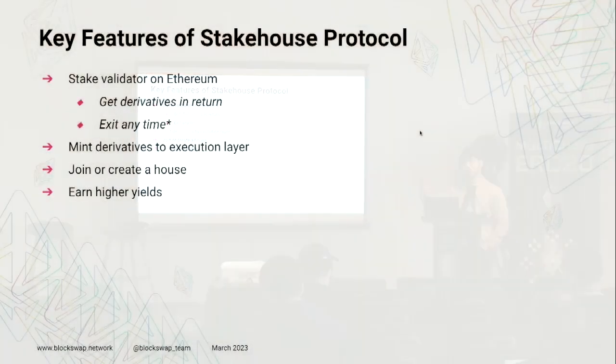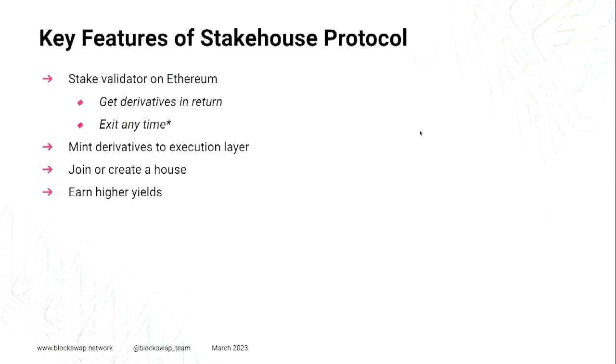When a user comes in with 32 ETH and they have the BLS public keys, the Stake House registry takes note of that — it knows what the BLS public key is and what the ECDSA wallet address is. The protocol knows who is depositing those 32 ETH and directly routes all of those 32 ETH to the deposit contract. Then you wait until the Ethereum deposit contract on the consensus layer activates the validator, and once it's activated you are ready to mint your derivatives. For 32 ETH that you deposited, you will get back 24 DEET and 8 slot tokens.